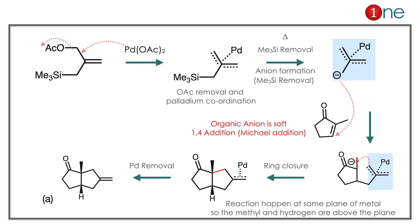Key learnings: palladium-mediated allylation creates an organic anion that enables 1,4-addition — 1,4-addition is favored with soft nucleophiles, and here the organic anion is soft. Second, if you have a coordinated ring closure, it always occurs in the same plane. Here both methyl and hydrogen are above the plane — syn product.